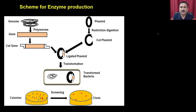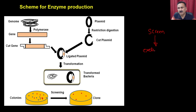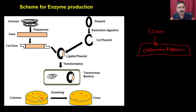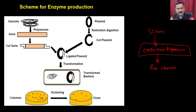Screening is a very important aspect. When you want to screen anything, you should screen a population based on exclusive properties. When we talk about the vector, the clone is going to give you exclusive properties, and these exclusive properties can be exploited for screening the recombinant clone. Let us discuss this in our subsequent slide.